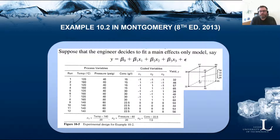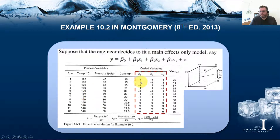We're going to look at how to fit this in multiple linear regression to get the estimated values of the betas: beta 0, beta 1, beta 2, and beta 3. To do this we take the design matrix with X1, X2, X3 and the columns with the signs or levels of the factors. Notice that we also have four center points in this design. We then complete it with a first column of only ones.